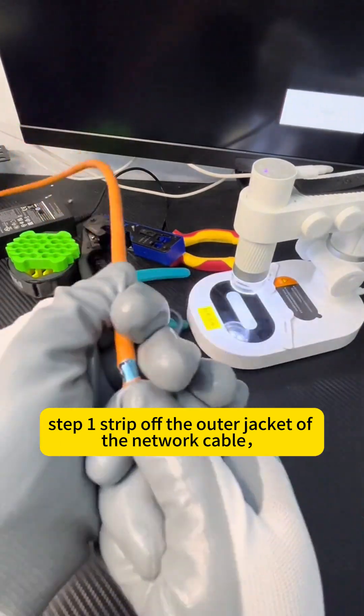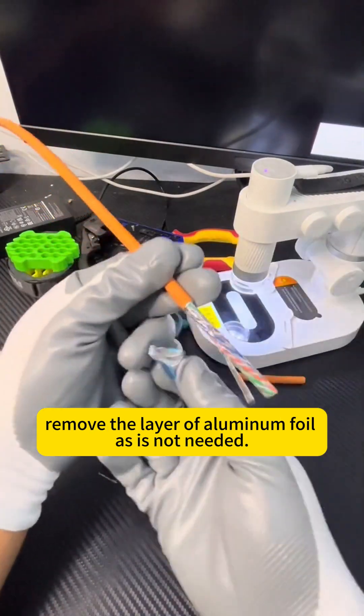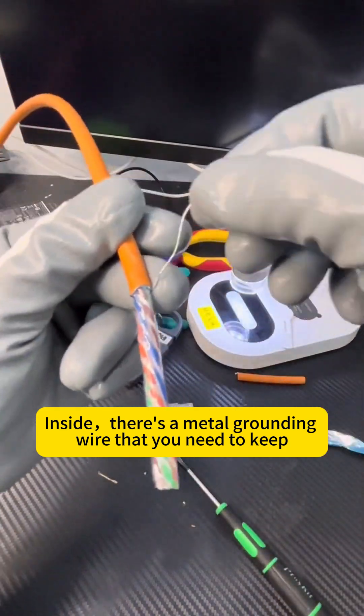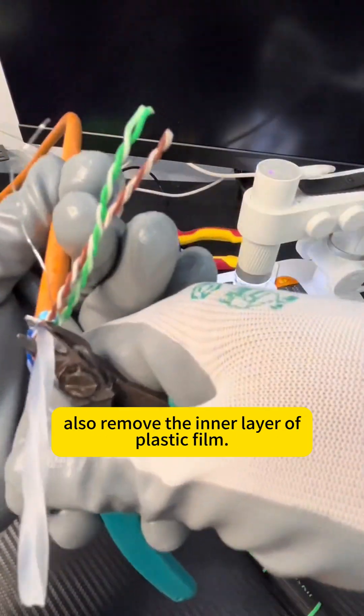Step one, strip off the outer jacket of the network cable. Remove the layer of aluminum foil as it's not needed. Inside, there's a metal grounding wire that you need to keep. Also, remove the inner layer of plastic film.